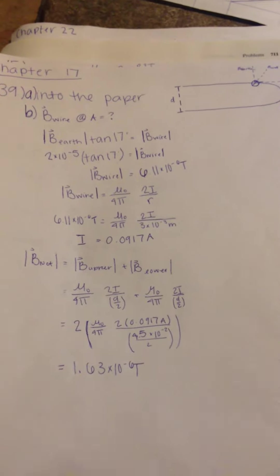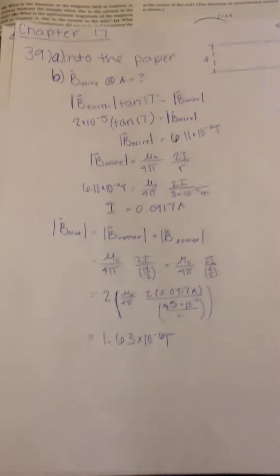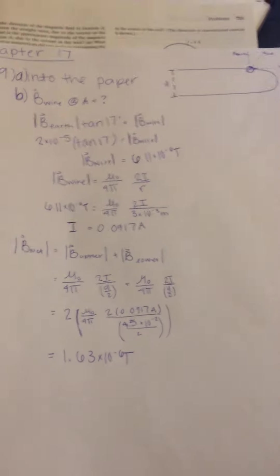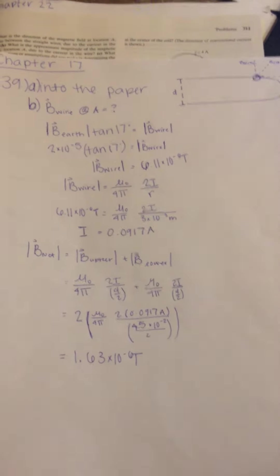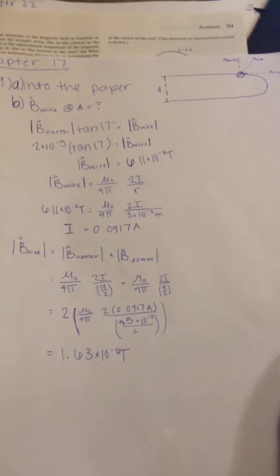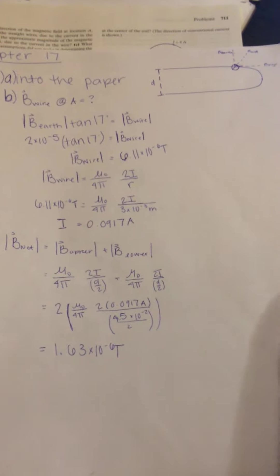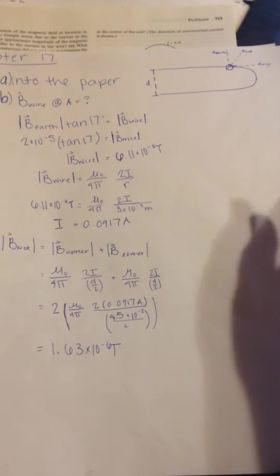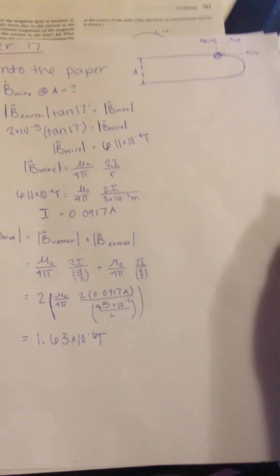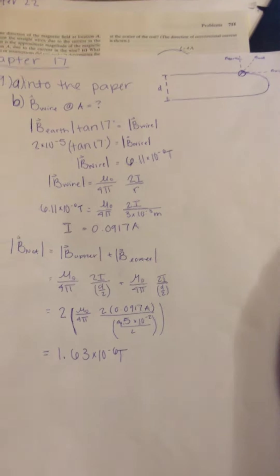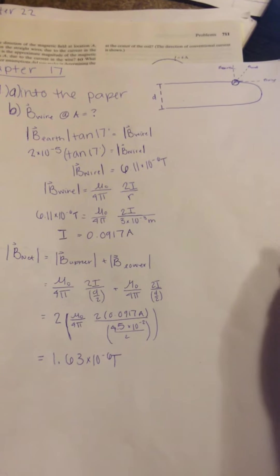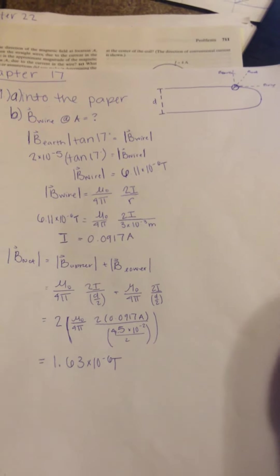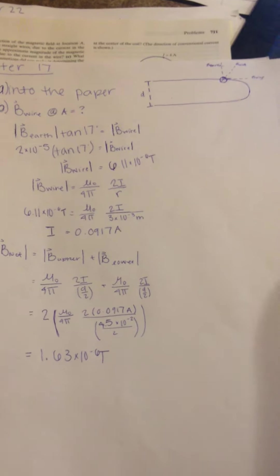First, the first question asks us what is the direction of the magnetic field. Okay, so we know that the magnetic field due to the wire is west, so that the current flows north in that part of the wire. And so the magnetic field at point A due to both the top and bottom segment is directly into the page. We can use the right-hand rule.